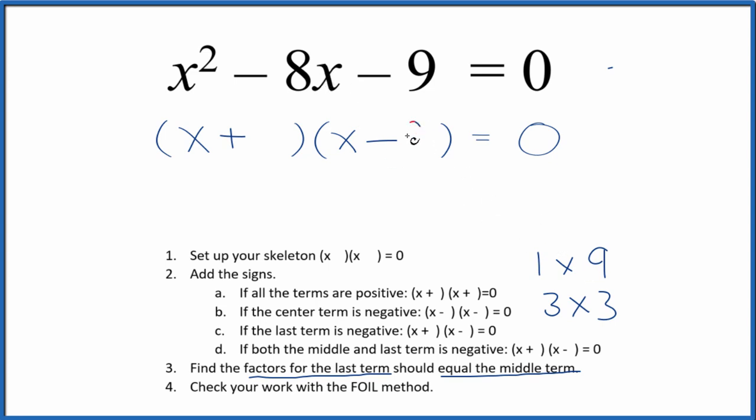So why don't I put a negative 9 here, since I have a negative 8 up here, and then the positive 1. 1 and negative 9, that would equal negative 8. But let's check our work with the FOIL method.